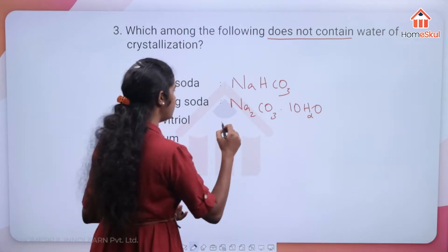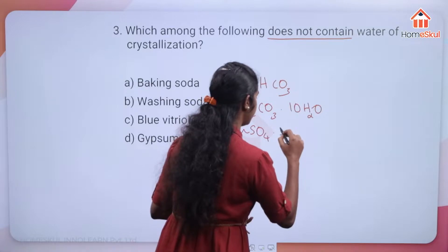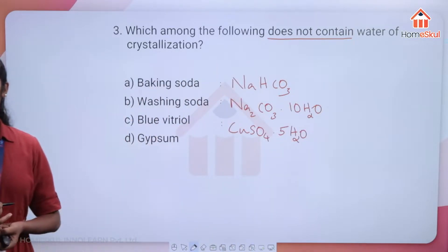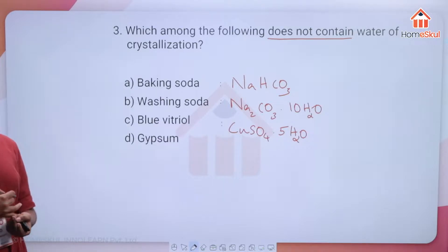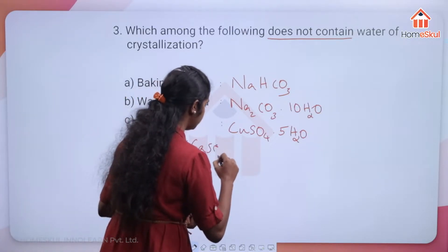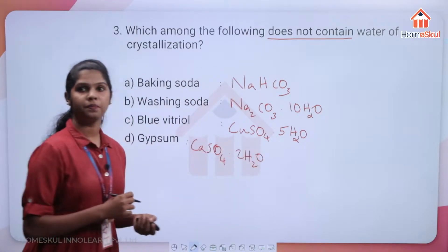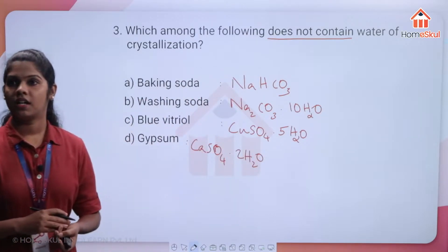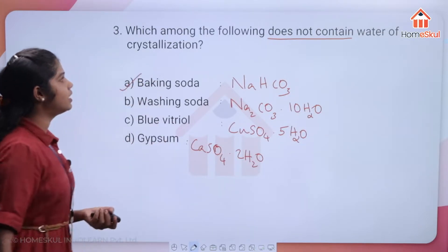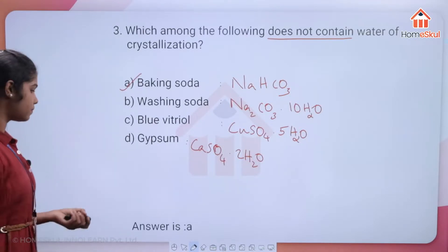Blue vitriol is CuSO4·5H2O, and gypsum is CaSO4·2H2O. All of these except baking soda contain water of crystallization. So the answer is A — baking soda (NaHCO3) does not contain water of crystallization.